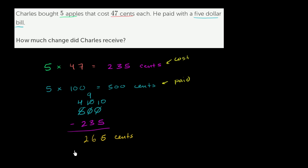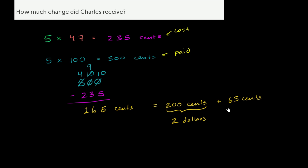If we wanted to write this in terms of dollars, we already know that there are 100 cents per dollar. So this could be viewed as 200 cents plus 65 cents. And 200 cents, well, this is two groups of 100 cents or $2. So this right over here is $2 and 65 cents. Or you could view this, because 65 cents is really 65 hundredths of a dollar, you could view this as $2 and 65 hundredths of a dollar. Or $2 and 65 cents. So that's how much change Charles should receive.